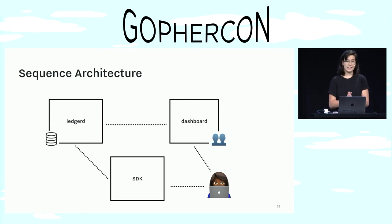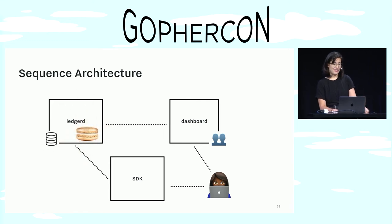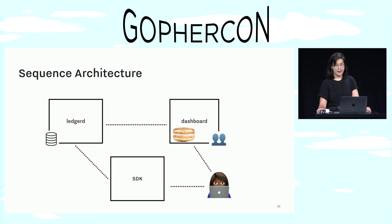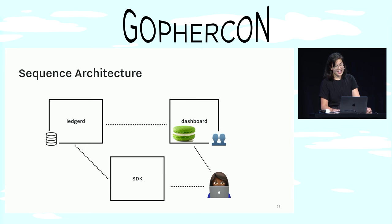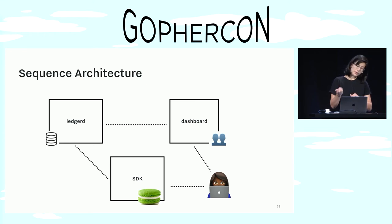So we dove right in to swapping out our old auth system. We decided to have LedgerD, which is our target service, mint each team an all-powerful golden macaroon without any caveats. LedgerD would then hand the golden macaroon to Dashboard, which could then attenuate the golden macaroon with third-party caveats to restrict it to a certain user — at which point it's no longer a golden macaroon. This attenuated macaroon was then shared with the end user who could stick it in their SDK.